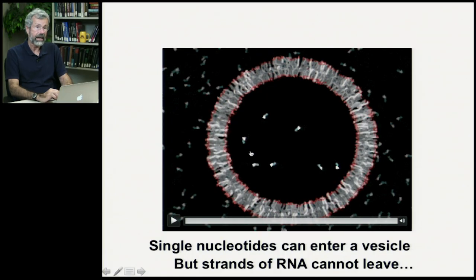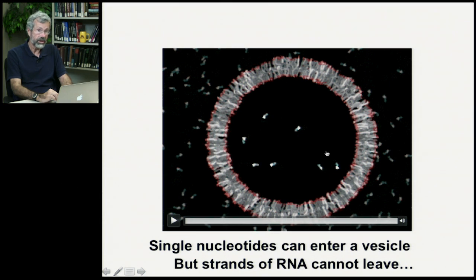So we've had, by physical processes, the manufacture of what's essentially going to be like a cell wall. But it's a permeable cell wall that allows nucleotides to come in. Interestingly, once they're inside, if they can get together in a chain, or if there's been a pre-existing chain inside, the RNA strand cannot leave. So this membrane is only permeable to the smaller molecules.